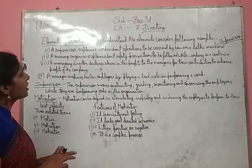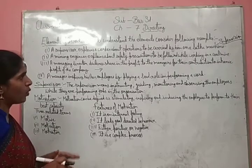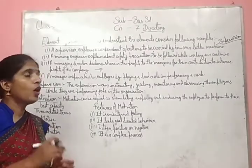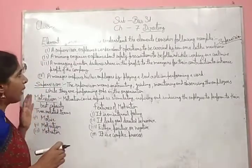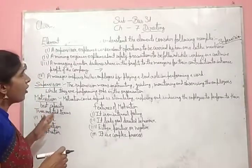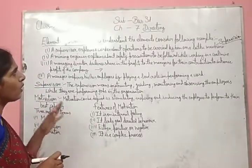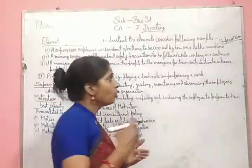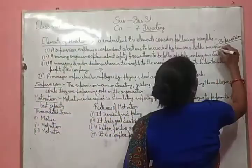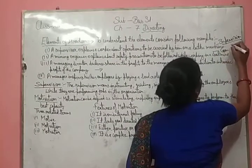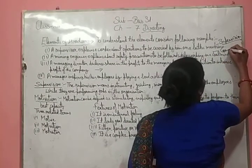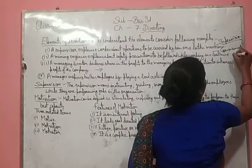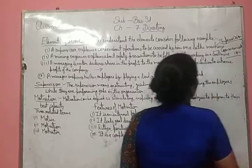Second example: a mining engineer explains about safety precautions to be followed while working in a coal mine. The mining engineer is explaining safety precautions to his workers while they are working in the coal mine. So this is communication — our second element of direction.